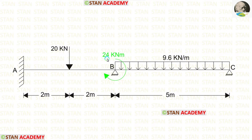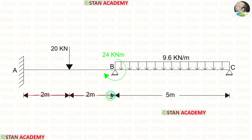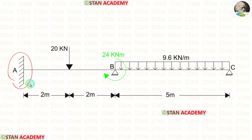At support B we have a couple moment of 24 kNm acting in the clockwise direction. The length of AB is 4 meters and the length of BC is 5 meters. At point A we have a fixed support, and at points B and C we have hinged supports.